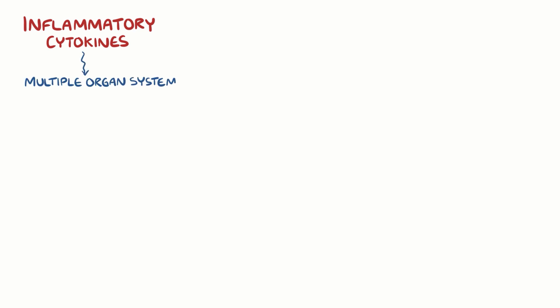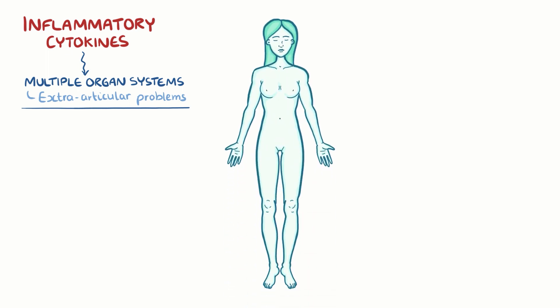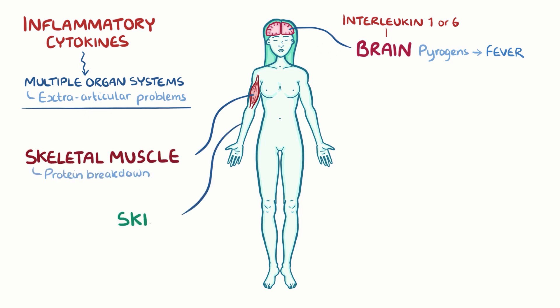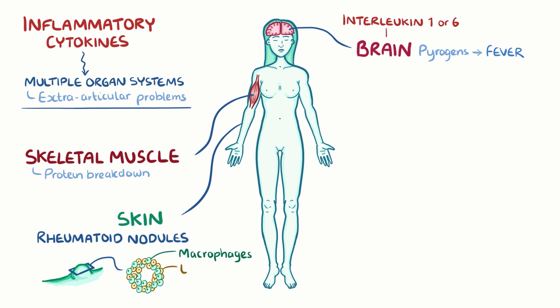These inflammatory cytokines don't just stay within the tight joint space. Instead, they escape through the bloodstream and reach multiple organ systems, causing extra-articular problems — meaning problems beyond the joint space. For example, interleukin-1 and interleukin-6 travel to the brain, where they act as pyrogens, inducing fever. In skeletal muscle, they promote protein breakdown. And in the skin, as well as many visceral organs, they lead to the formation of rheumatoid nodules, which are round-shaped collections of macrophages and lymphocytes with a central area of necrosis, or tissue death.